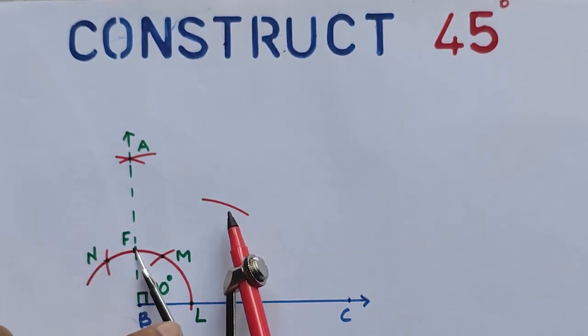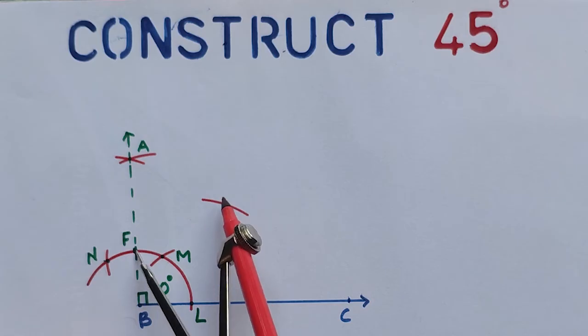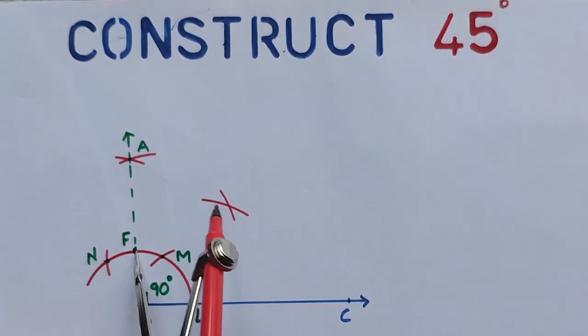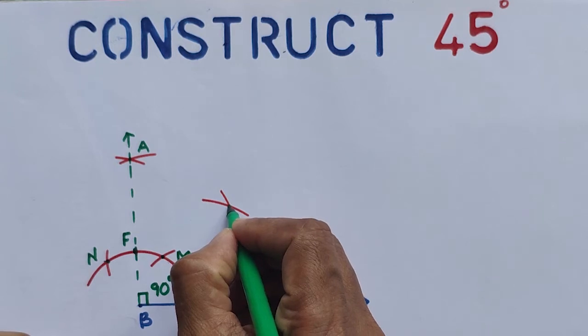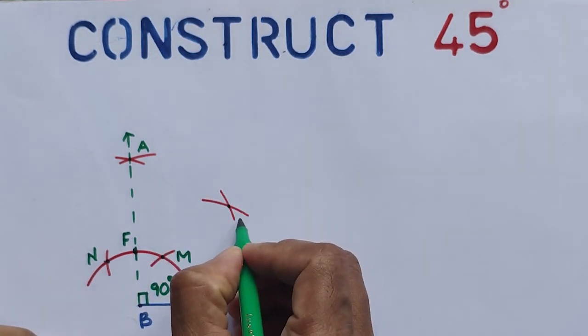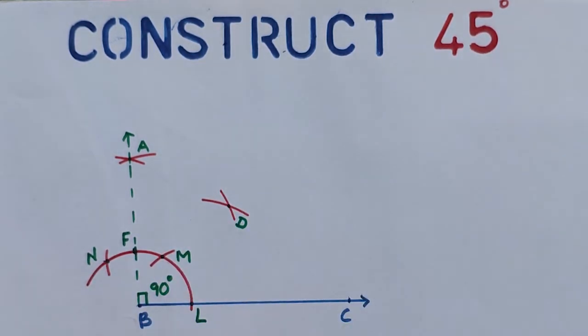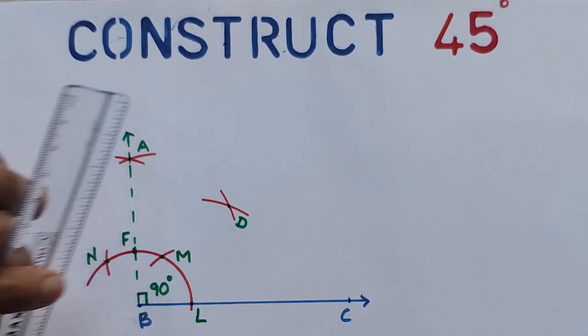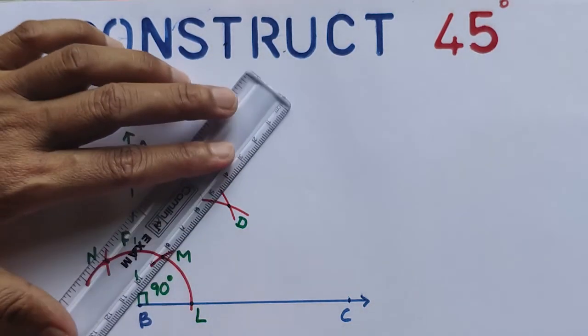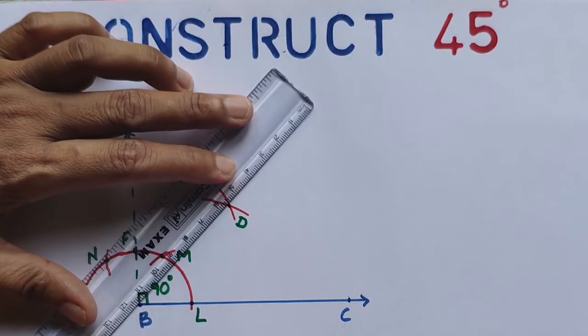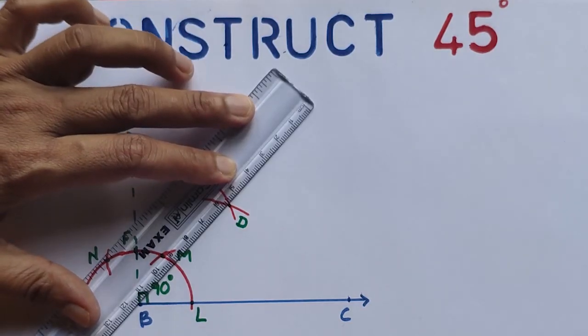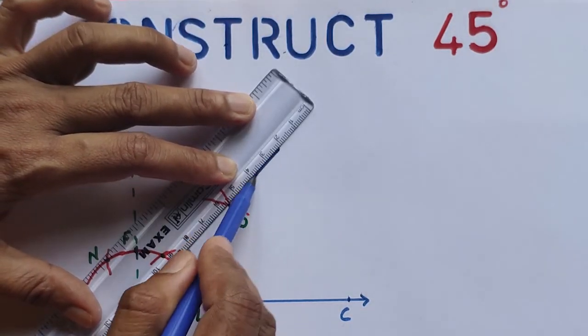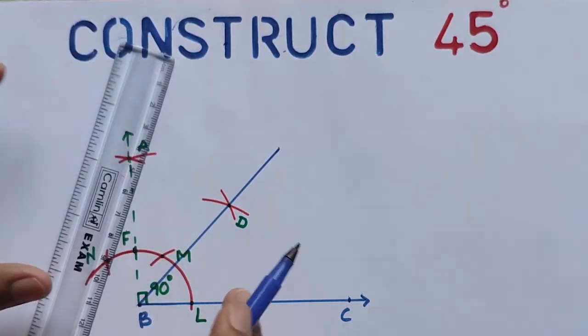So place the metal tip on F and place the metal tip on L, then draw arcs. The intersecting point is D. Join D and B. We will get 45 degrees.